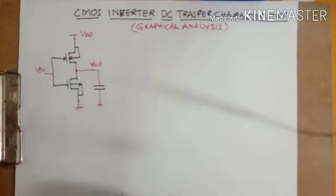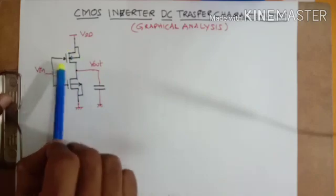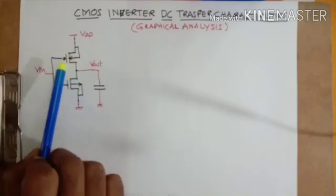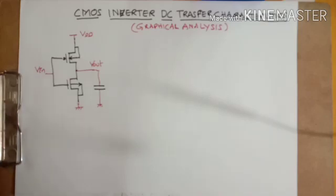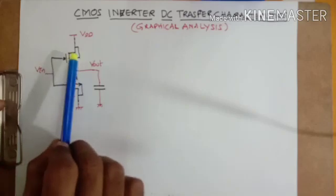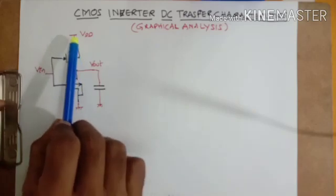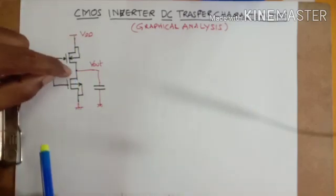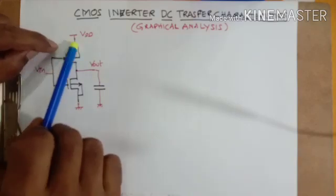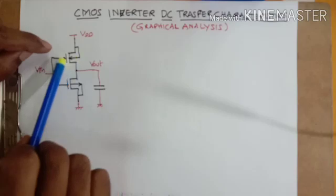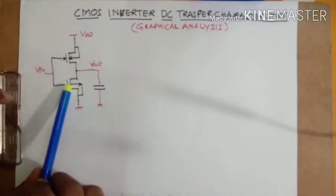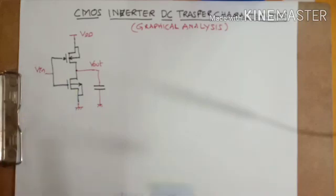This is the CMOS inverter. The PMOS transistor symbol has a bubble. A MOS transistor is a four-terminal device: source, drain, gate, and substrate — the body. For PMOS, drain and source are P-type and body is N-type, forming a PN junction. The current direction arrow points inward. For NMOS the arrow is outside.